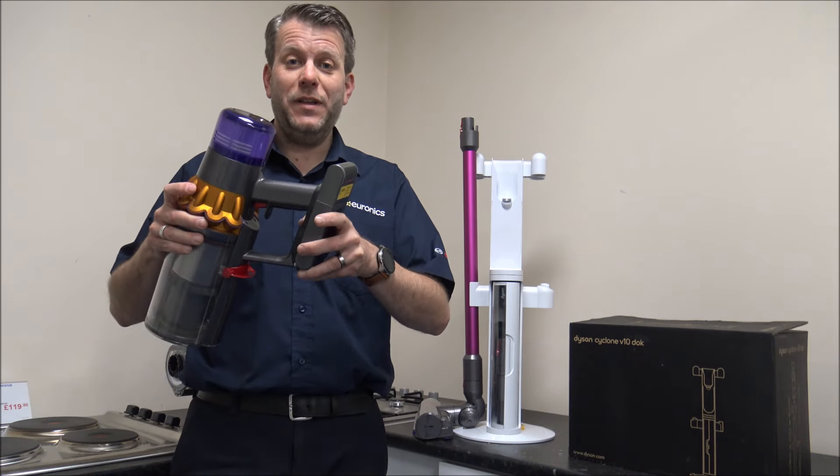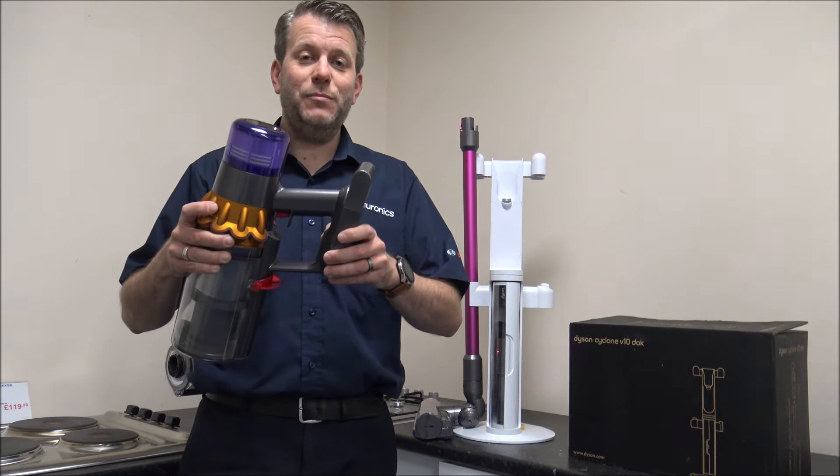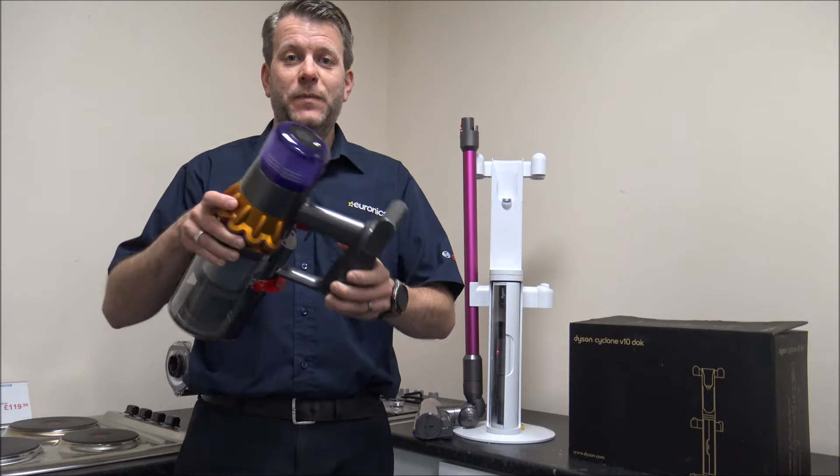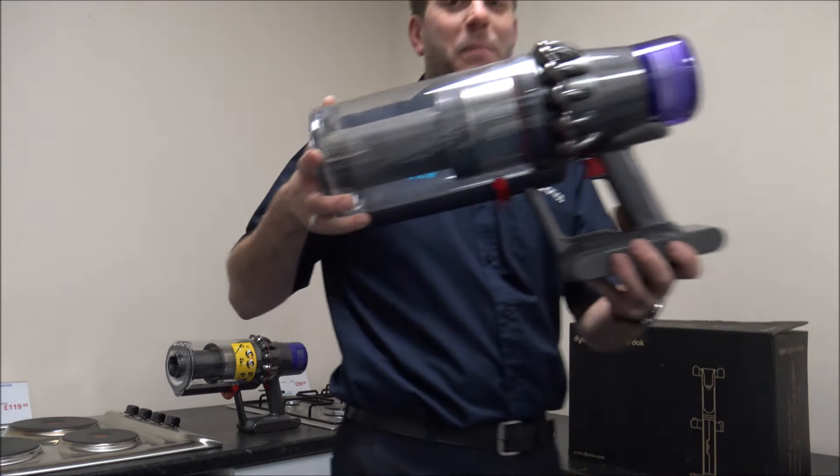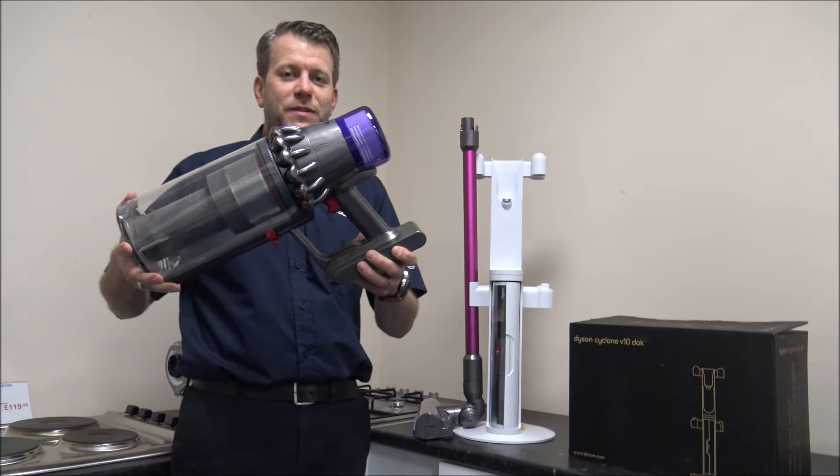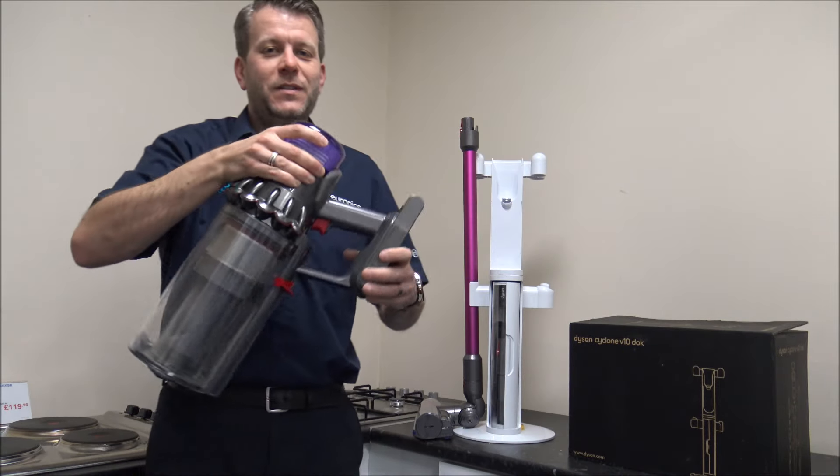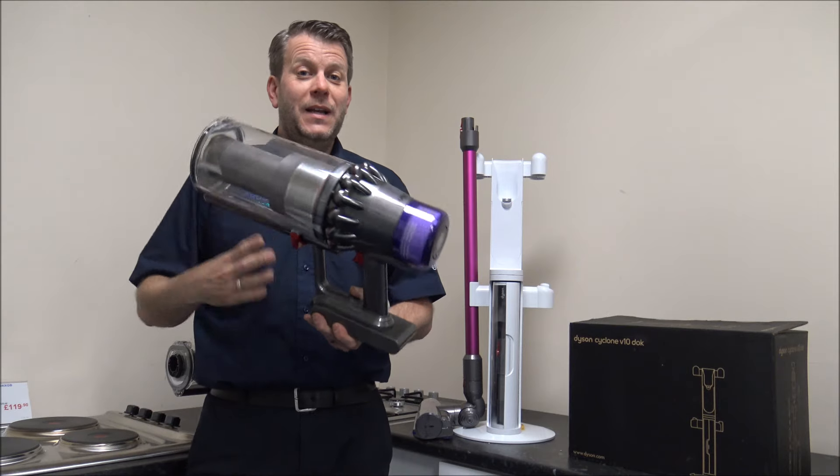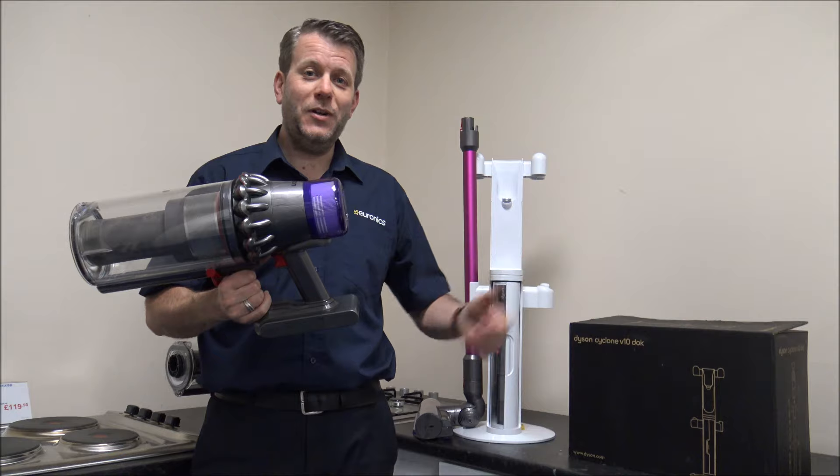So if you are thinking about buying something like this for the V11 or V15, then there is a separate link, hopefully, that I'll put below to show you where to find one of those. And the final one was the big boy in the range. This is the Outsize Absolute. With that one, no chance. So that doesn't fit either. So clearly Dyson have called this the V10 dock for a reason. Because it will only fit the V10.